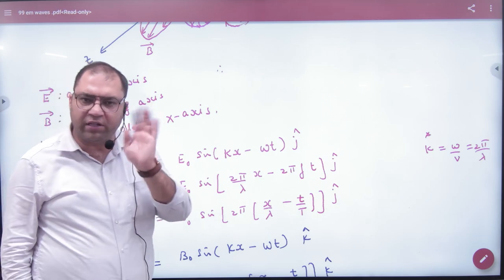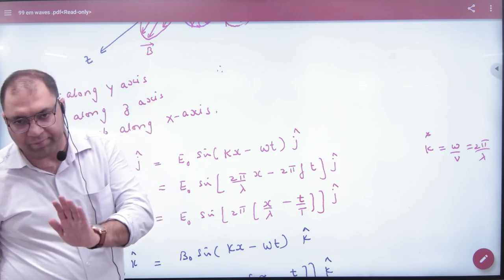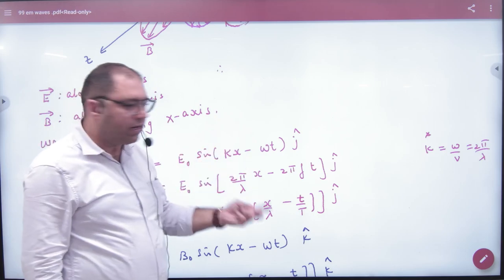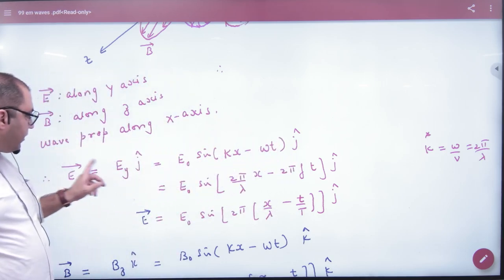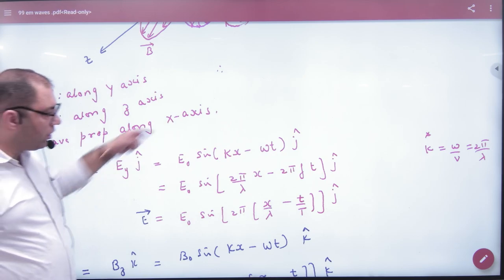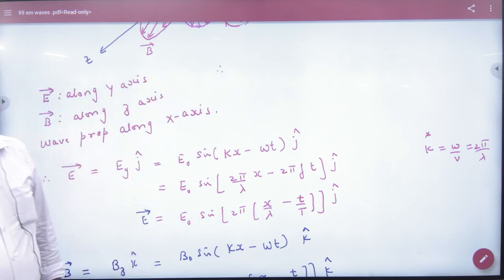We don't have to remember the wave equation. We have given the numerical equation. What is left behind it? J-cap. This means the direction of the electric field is along y-axis. The first point is clear.